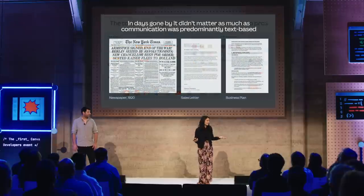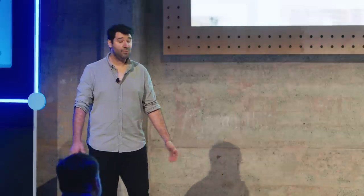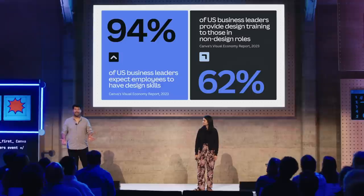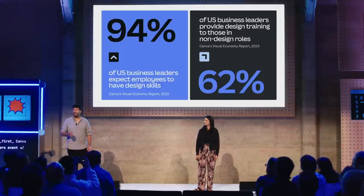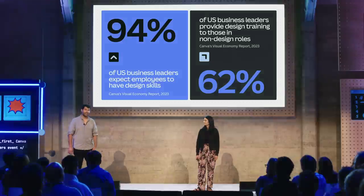It wasn't just the programs that you had to learn and navigate. The tools were extraordinarily fragmented and only accessible to professionals or those that could afford them. But back then, it didn't really matter that much because communication was predominantly text-based. Today, visual communication has become the status quo. Our recent visual economy report states that 94% of US business leaders now expect their employees to have visual design skills, and 62% of these leaders are investing in on-the-job design training.